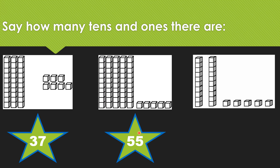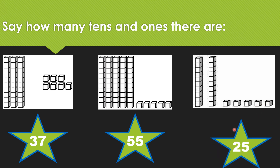Give yourself a big kiss. Now, before we do this last one together, I want you to try it on your own. Super counters, are you ready? Do you have your spy eyes on? Are you ready to go? There are one, two groups of ten and one, two, three, four, five ones. So that number is 25. Were you correct? Very good.